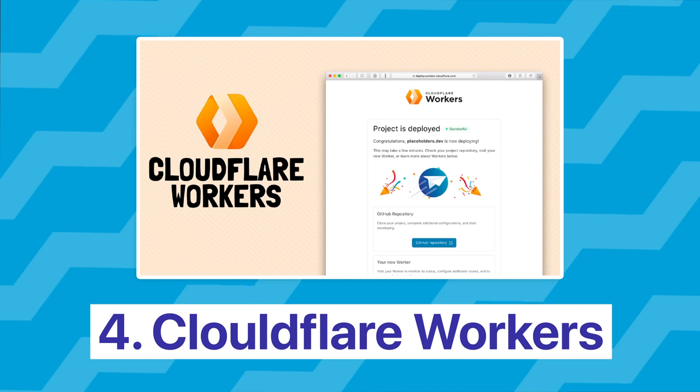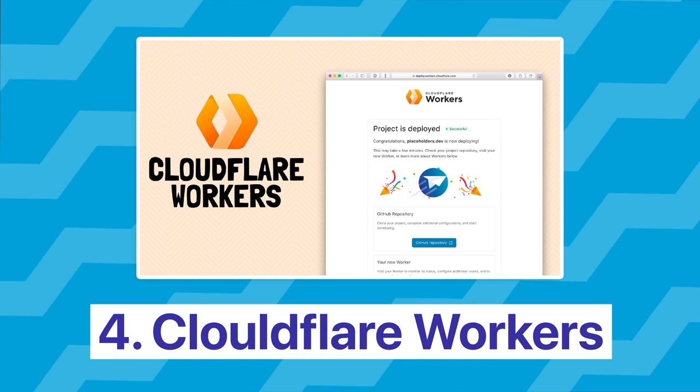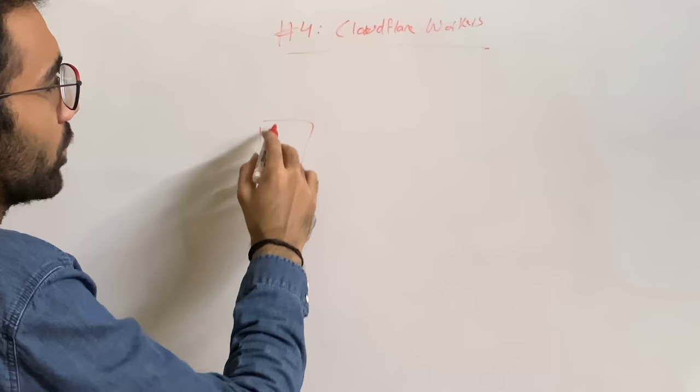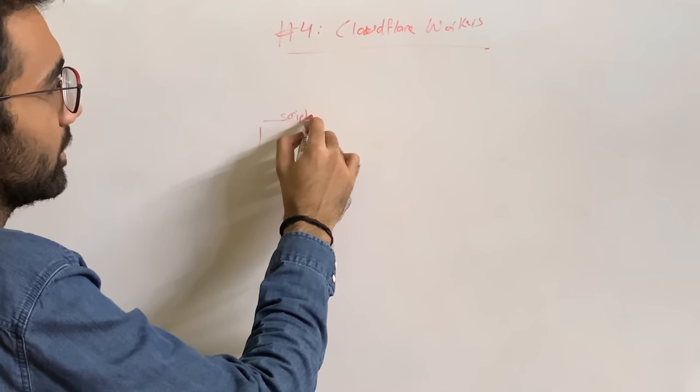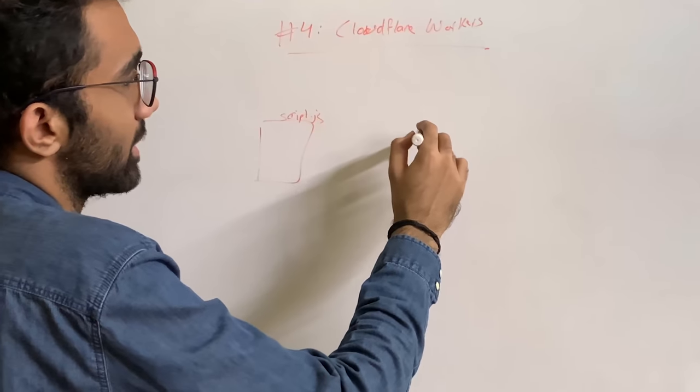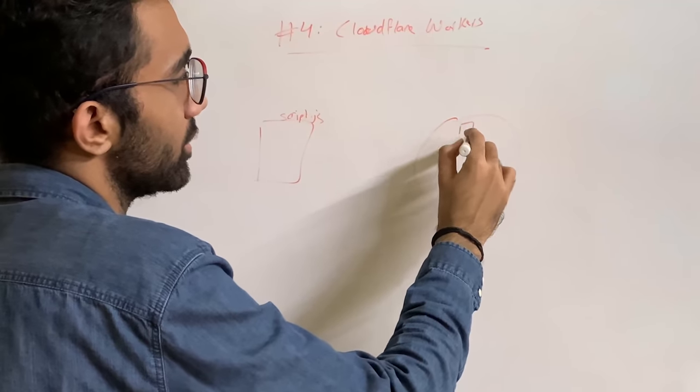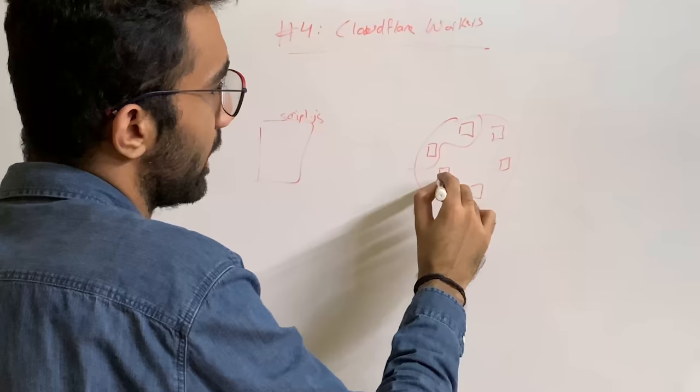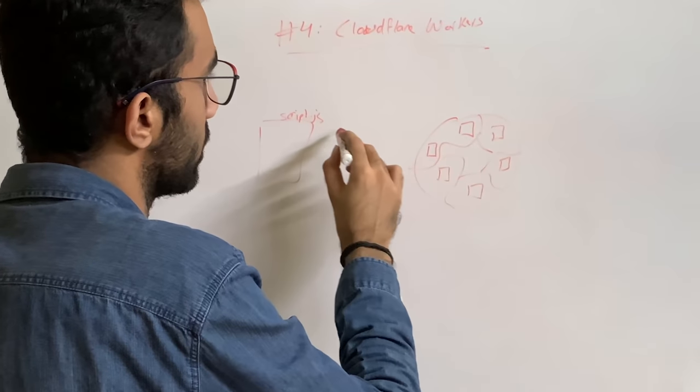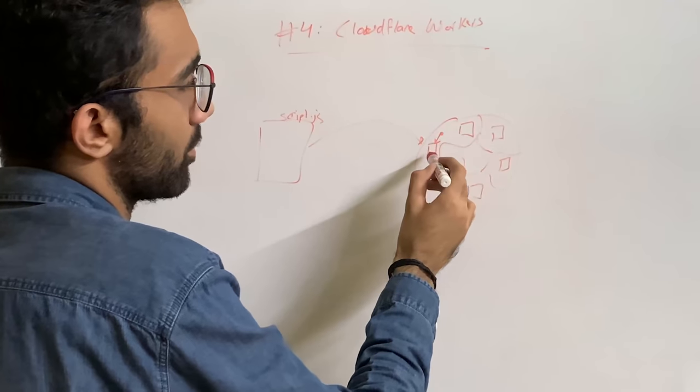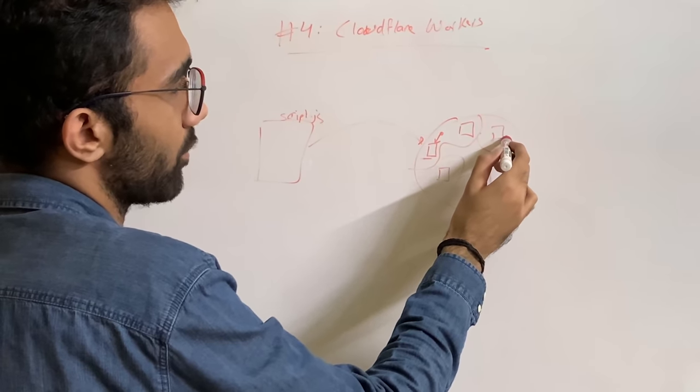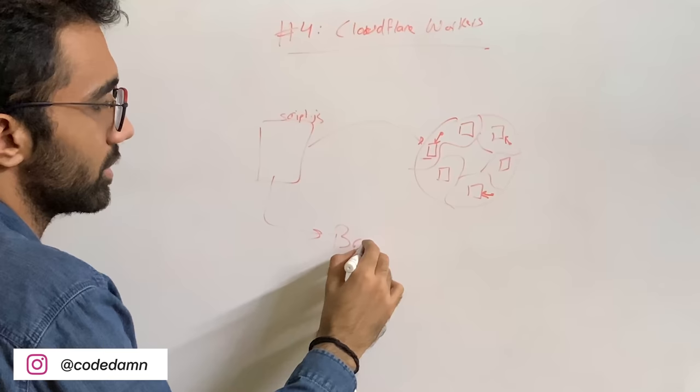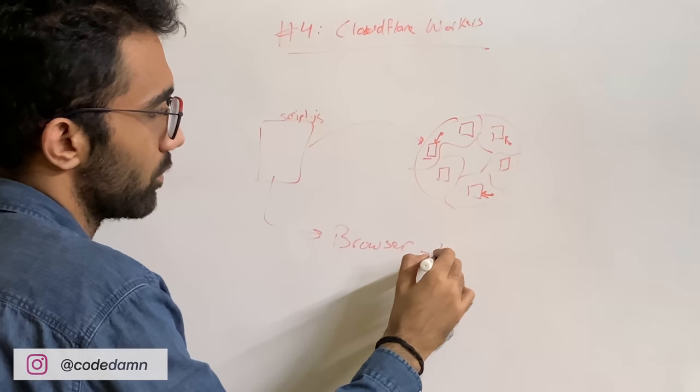The fourth way you can host your APIs is using something like Cloudflare Workers, which allow you to pretty much do whatever you did in the AWS Lambda thing. But the only exception here is that Cloudflare could be running your script all the time, pretty much everywhere in the world. So anyone who's sitting here could run it from the nearest computer, who's sitting here could run from the nearest computer, and so on.